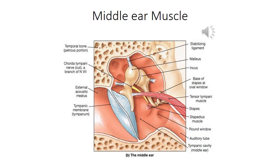Here we can see two tiny skeletal muscles attached to the stapes and the malleus. The tensor tympani muscle pulls the handle of the malleus inward, thereby increasing the tension of the tympanic membrane. This makes the membrane more responsive to sound waves.